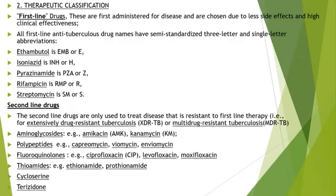The next classification is therapeutic classification. In therapeutic classification, the first category is first-line drugs. These are first administered for the disease and are chosen due to fewer side effects and high clinical effectiveness. All first-line anti-tubercular drugs have semi-standardized three-letter and single-letter abbreviations. First-line drugs include: Ethambutol (EMB/E), Isoniazid (INH/H), Pyrazinamide (PZA/Z), Rifampicin (RMP/R), and Streptomycin (SM/S).